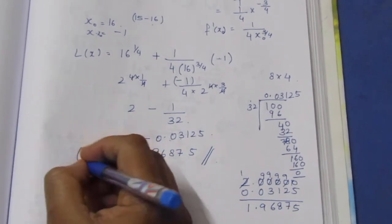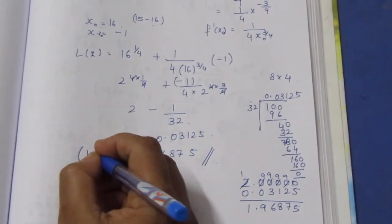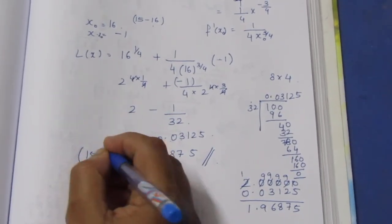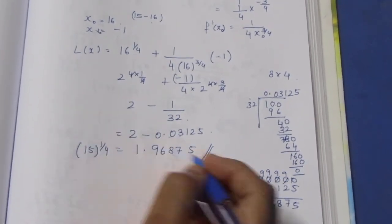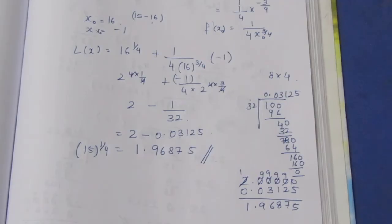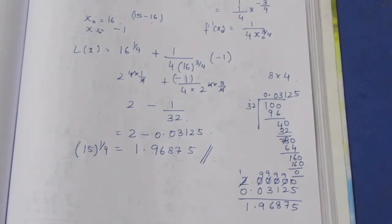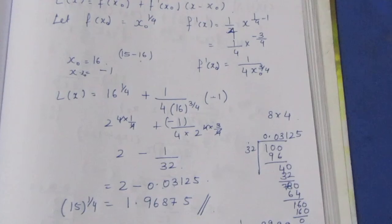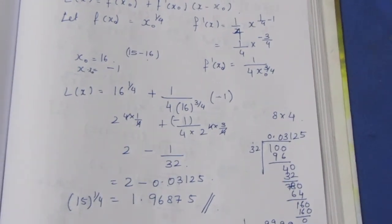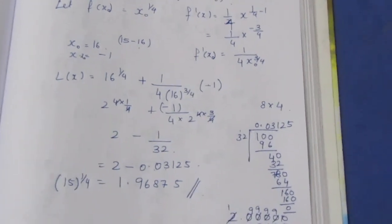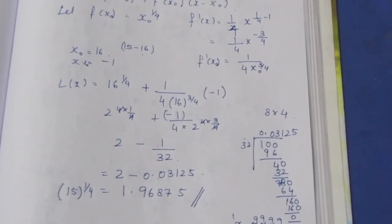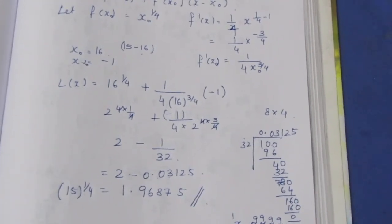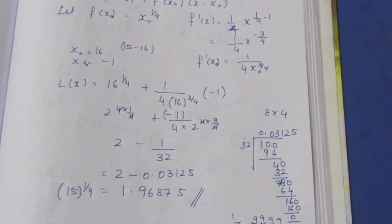So 1.96875 is the approximate value of 15 to the power 1 by 4, which is the 4th root of 15. That is the final answer for this sum. Thank you.